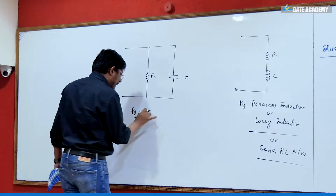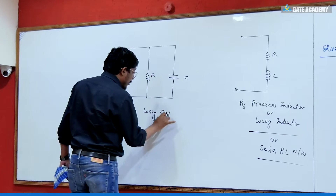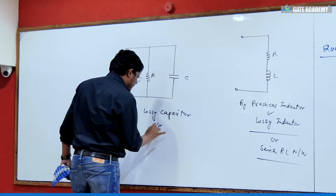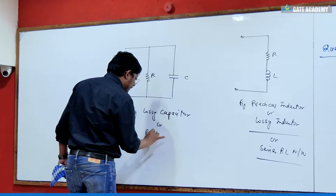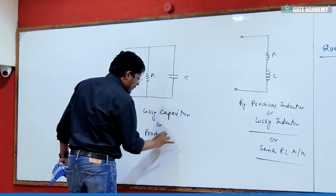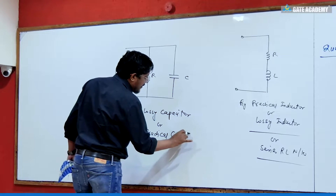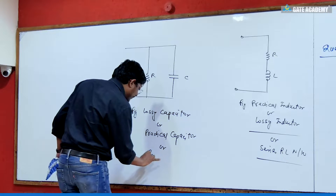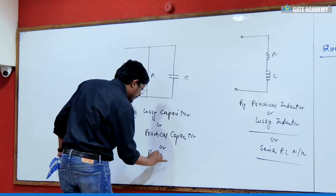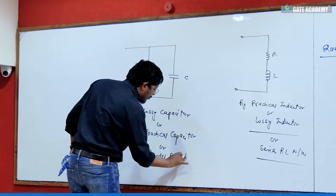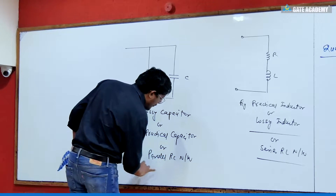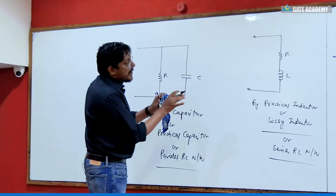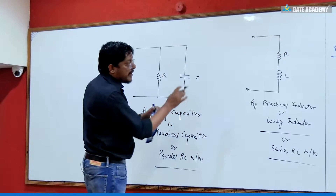This is the first thing you should know. A lossy capacitor or practical capacitor means a parallel RC network. A parallel RC network means lossy capacitor, and a series RL network means lossy inductor or practical inductor.